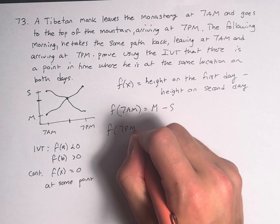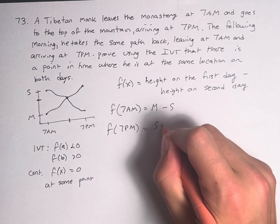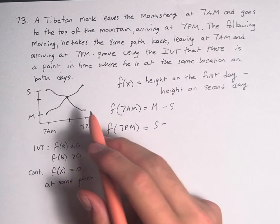f(7 p.m.) is the height on the first day at 7 p.m., where he's at the summit, minus the height on the second day. At the end, he's back at the monastery.